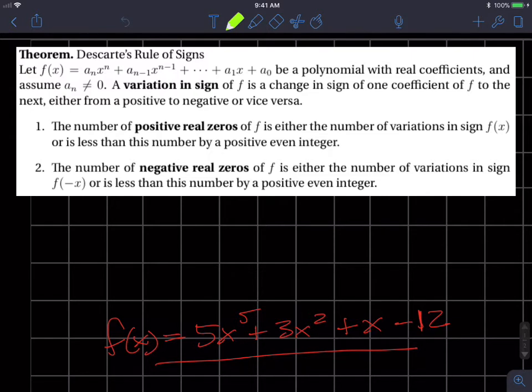As we look at Descartes' rule of signs above, you'll note that we start out with let this function equal, and that's our standard or generic or general equation for a polynomial. So they say let that be a polynomial with real coefficients and assume that a sub n is not equal to zero.